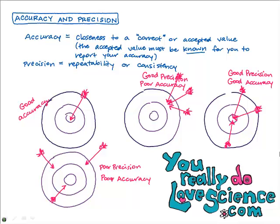So in your measurements, if your measurements are correct and you're actually getting the right answer, you can say that's very accurate. But if you're consistent, then you can say you're precise. You could be consistent and correct, or you could be consistent and incorrect. I think you understand the difference now between accuracy and precision.